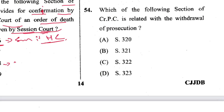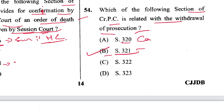Question 54: Which section of CrPC is related to withdrawal of prosecution? Section 321. B is the answer. Section 320 is compounding of offences.